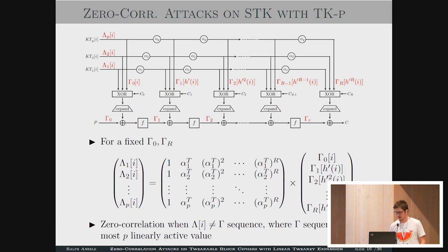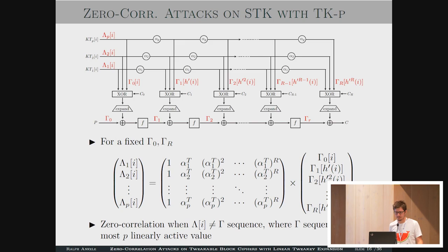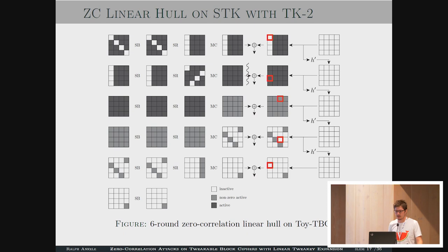If we want to apply that to ciphers with more tweak key lines, we can do a similar thing. We compute the gamma sequence for all of the tweak key lines, then obtain a zero correlation. We fix the input and output mask, calculate everything, and obtain a zero correlation when at most B linear active values are present, where B is the number of lines in the tweak key. So if it's TK2, we can have two active values, and so on. With two tweak key lines in our toy cipher, we can extend the attack to a six-round attack.